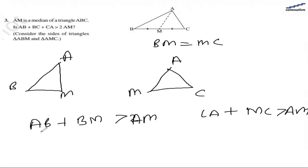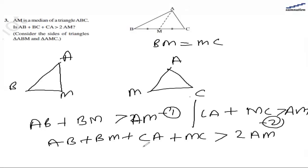If we add these two inequalities, this is the first statement and this is the second statement. We are going to add them, so we have AB plus BM plus CA plus MC is greater than AM plus AM, which is 2AM.